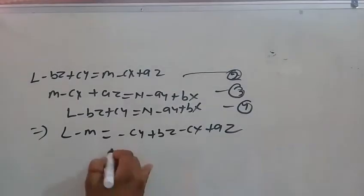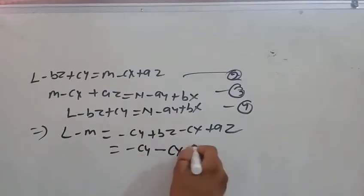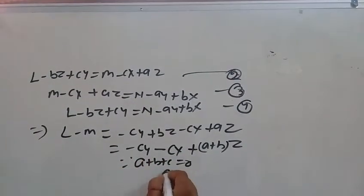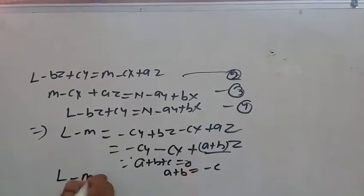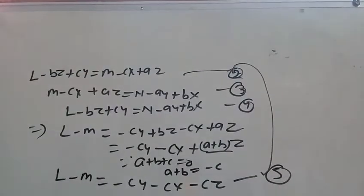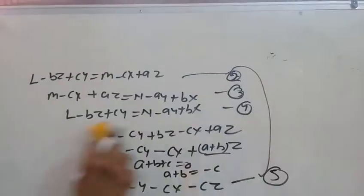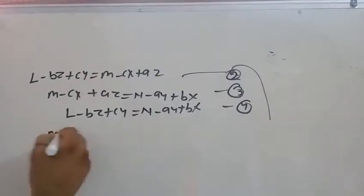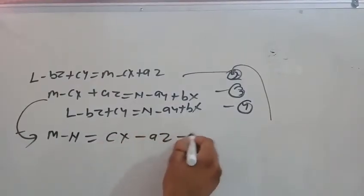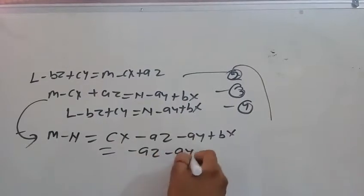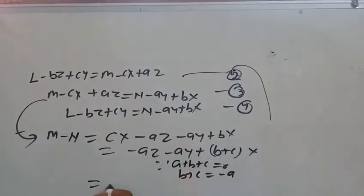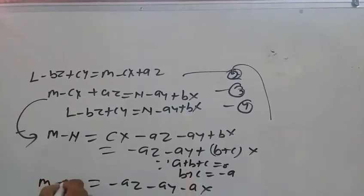We get: cy minus cx plus a plus bz plus b plus c equal to zero. Since a plus b plus c equals zero, we substitute. Then: l minus cy minus cx minus cz — this is equation 2. Solving equation 3: M minus N equal to cx minus cz minus cy plus bx, and using a plus b plus c equal to zero gives a plus c equal to minus b. This gives: z minus cy minus cx, which is equation 6.